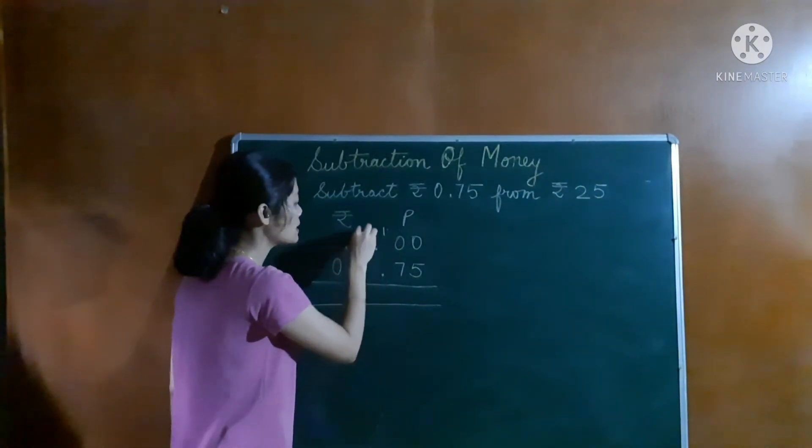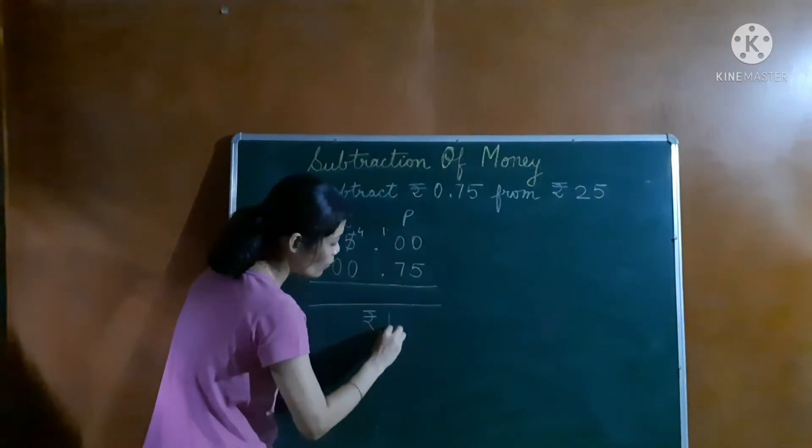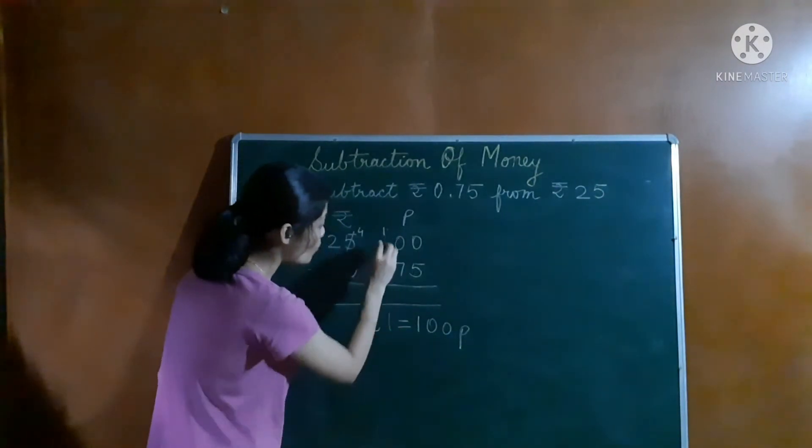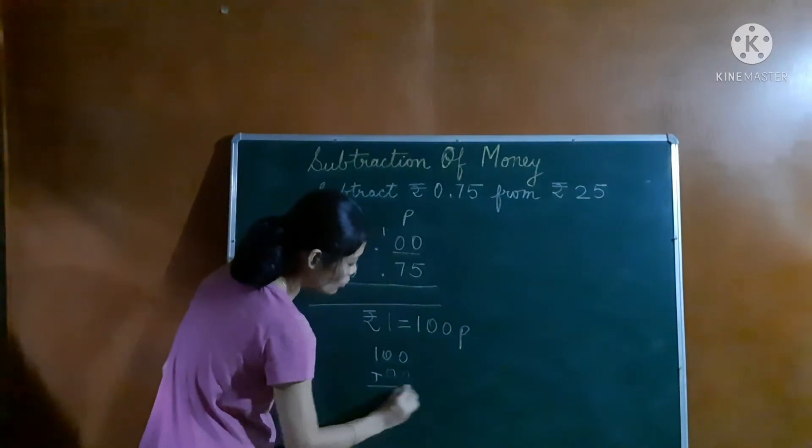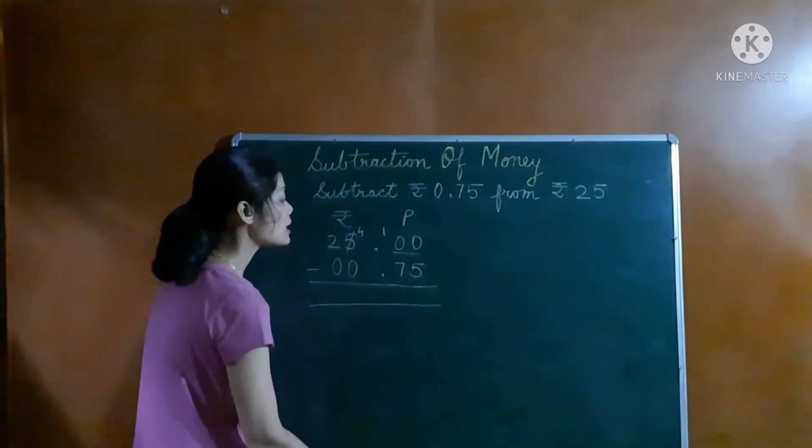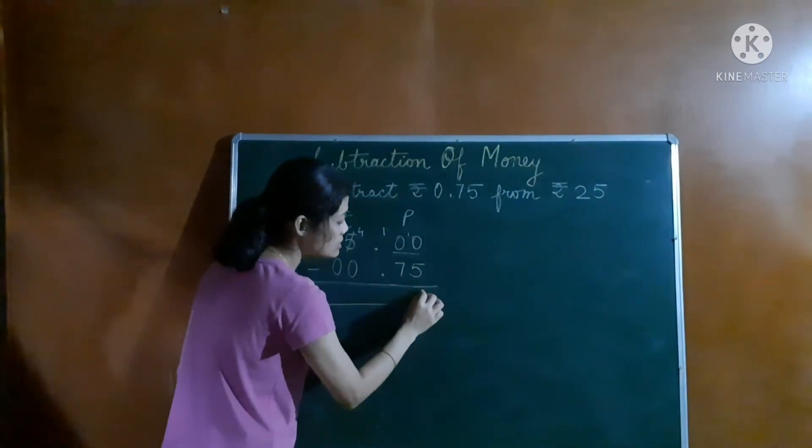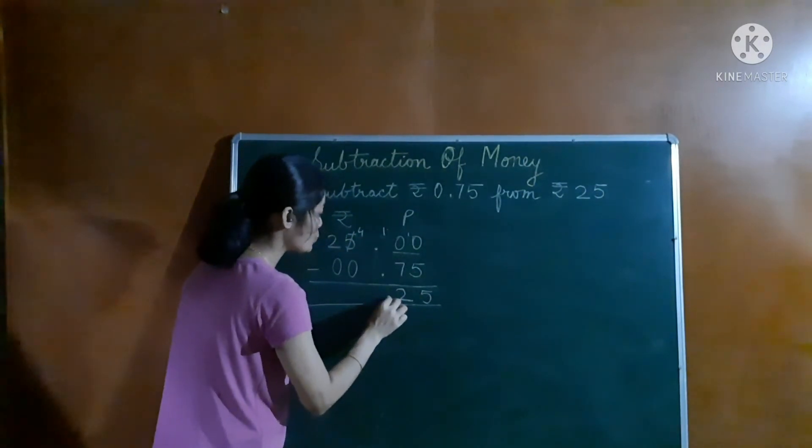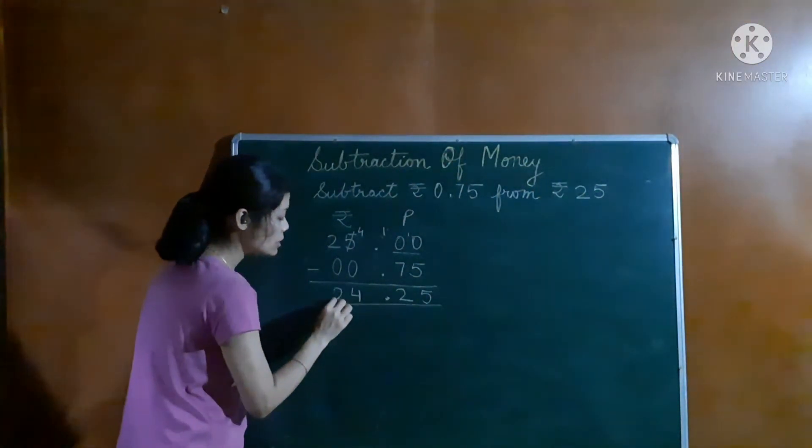Since we have borrowed, 25 rupees will be 24 rupees now. We borrowed 1 rupee, which is equal to 100 paise. So now this becomes 100 paise. We will subtract 75 from 100. 10 minus 5 is 5, 9 minus 7 is 2, 4 minus 0 is 4, and 2 minus 0 is 2. So the answer will be 24 rupees, 25 paise.